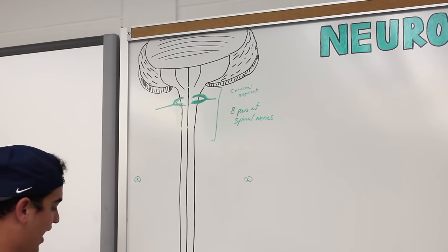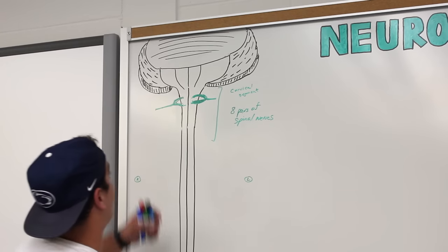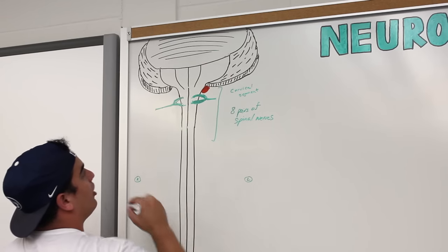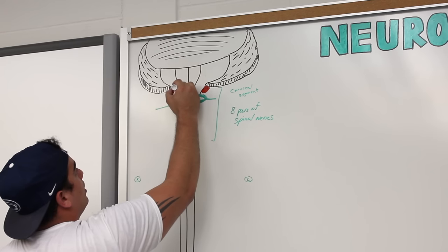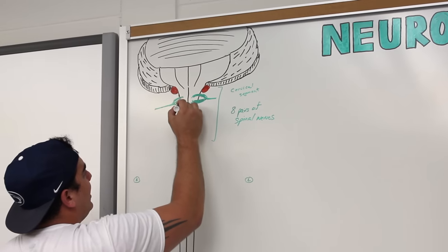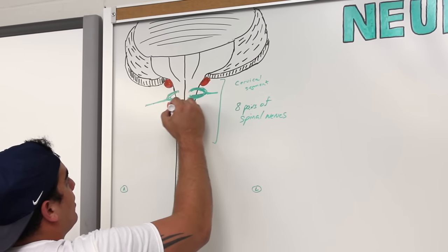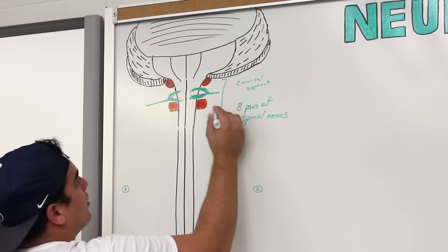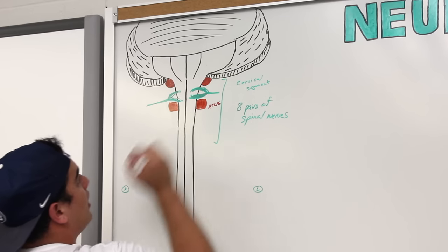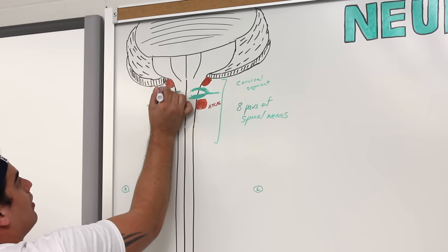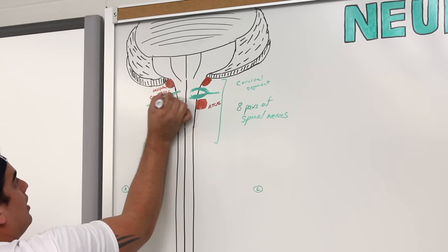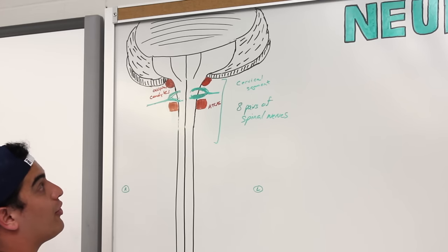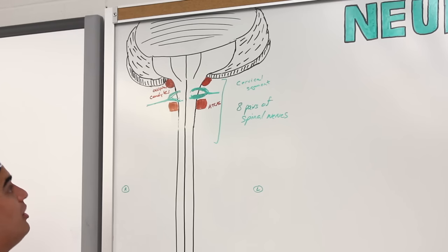The spinal nerves are coming out through the intervertebral foramens between the vertebrae. For example, there's the occipital bone up here and then the cervical vertebrae — atlas — below it. Coming in between the occipital condyles and the atlas is going to be the spinal nerve C1.